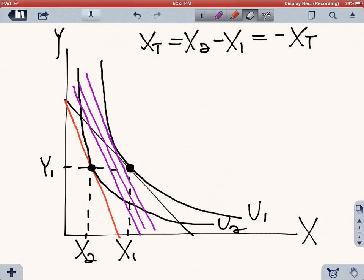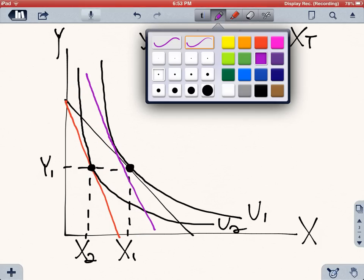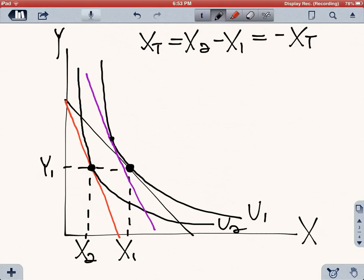So the new utility maximizing situation, if we gave the consumer back the income to bring him back to the original utility curve, we'll have the consumer consuming x3 and then y1. So what happened here?